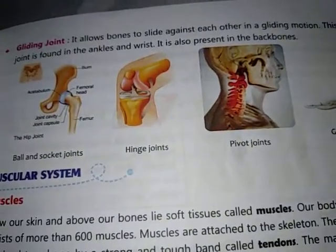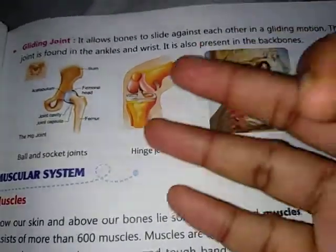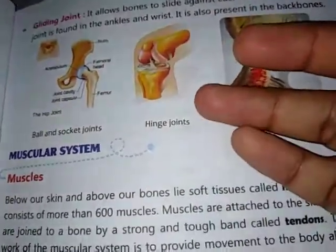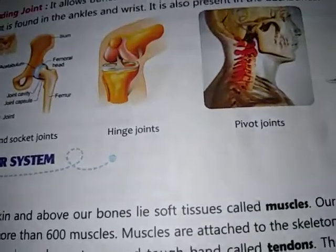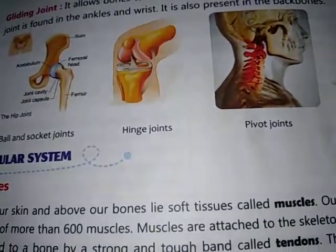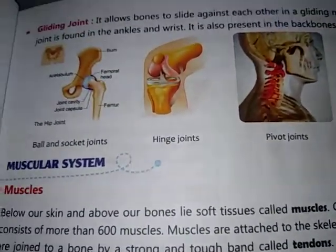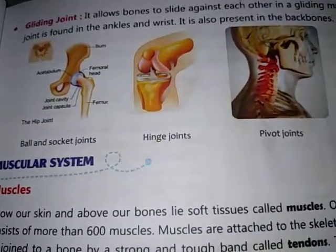These types of joints are found in your ankles and your wrist. That is enough for today's video. We have discussed all the joints, and in the next video we will be completing muscles. Thank you.